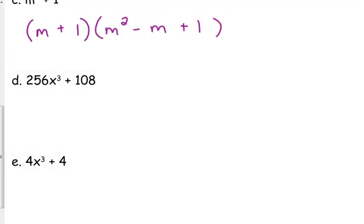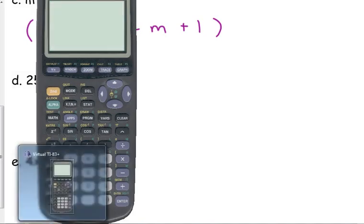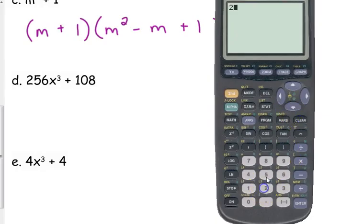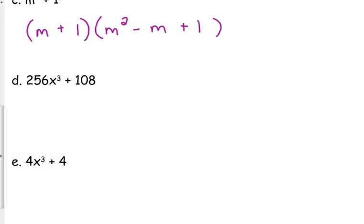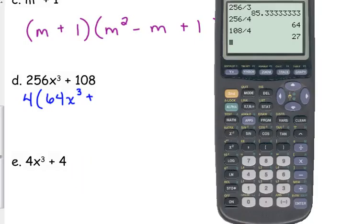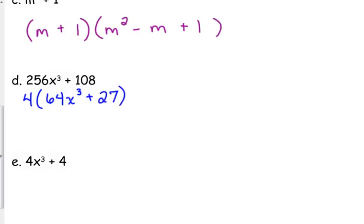So we'll get a couple more. 256x cubed plus 108. Here is an example of where 256 and 108 are not perfect cubes. 256 and 108 are not on our perfect cube list, so the only way this is going to factor is if they have a GCF. So I'm going to try 3. Nope, that didn't work. How about 4? 4 works. Yes, 4 works. So we'll start by taking out a GCF of 4.